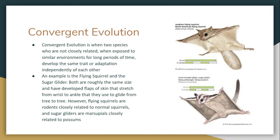Convergent evolution is when two species that are not closely related, living in similar environments, adapt in similar ways. For example, we have a flying squirrel and a sugar glider — these look very similar when you're staring at them. However, they're actually not closely related. Flying squirrels are squirrels, related to other squirrels and rodents, whereas sugar gliders are marsupials, much more related to possums than to squirrels. This is one of the issues where we need to use DNA to help figure things out instead of just looking at structures. Divergent evolution: one species turning into a bunch of different ones. Convergent evolution: different species adapting in the same way.